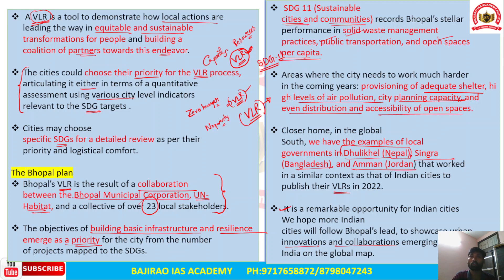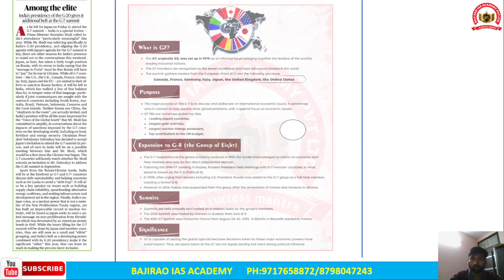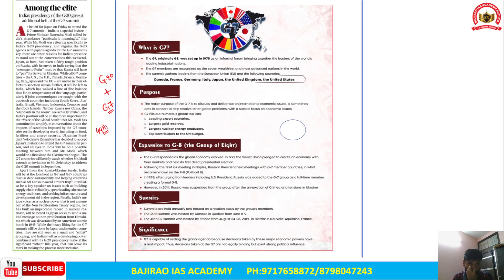The next news article relates to the G20 summit and the G7 summit. The 49th G7 Summit has been taking place in Hiroshima, a city in Japan that was hit by a nuclear bomb dropped by the USA during the Second World War.